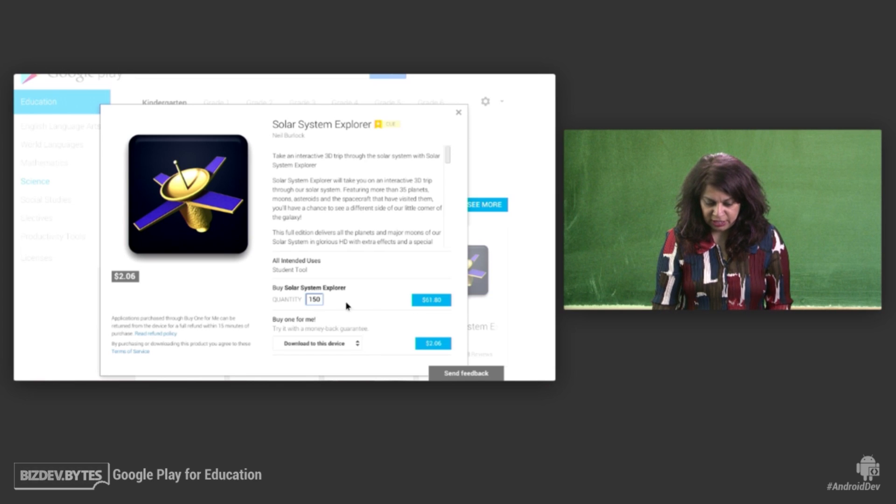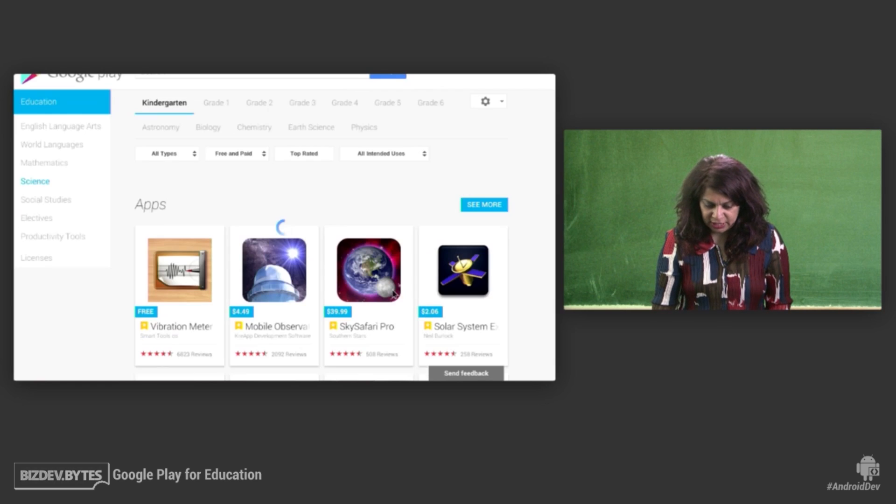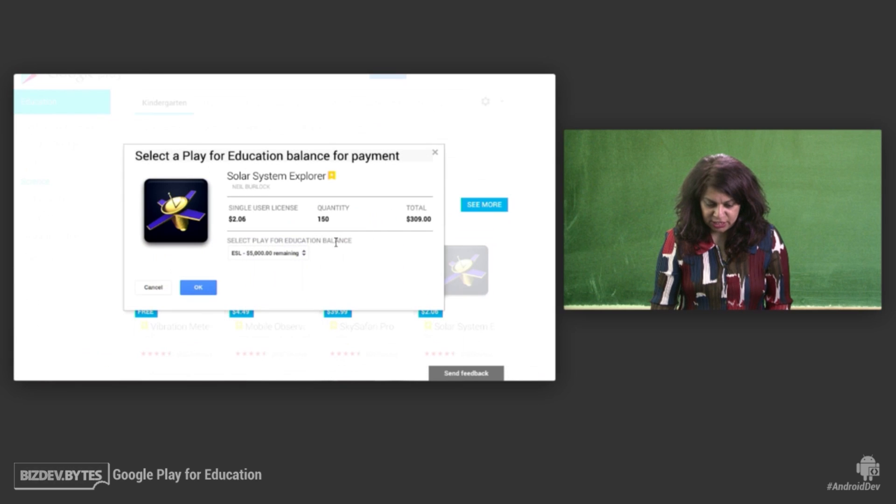So I'm going to click on, I'm going to enter 150 there. And notice how the price changes dynamically. And when I click on this, it actually takes me to a screen where I can select one of three POs my school has opened with Google already and use one of them to pay for this. So no more having to pay with my credit card and then getting reimbursement for that.